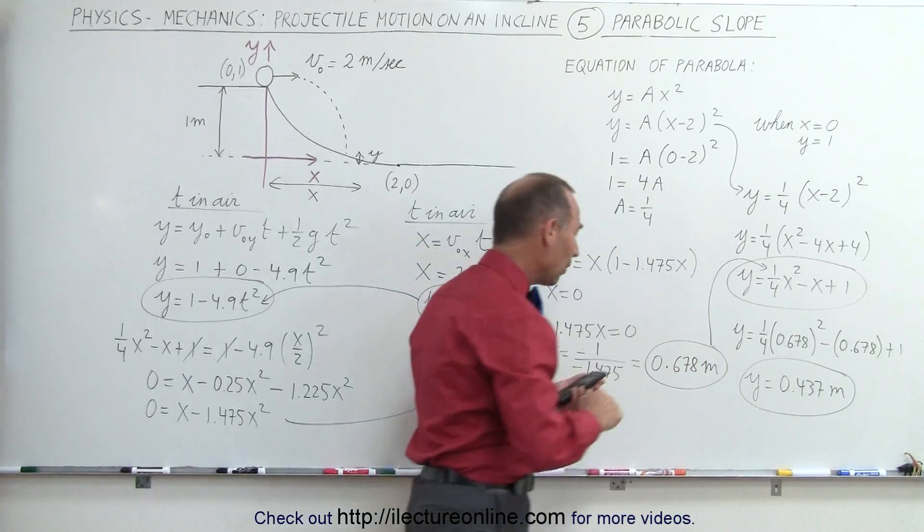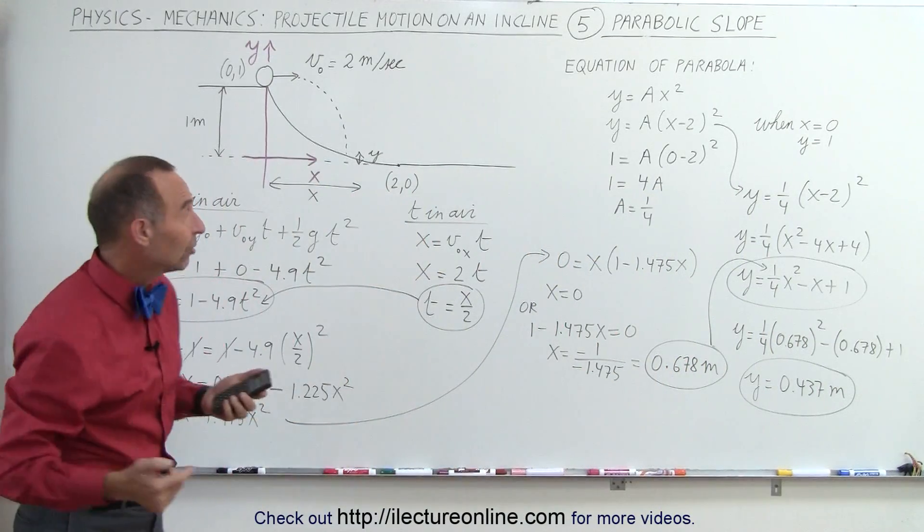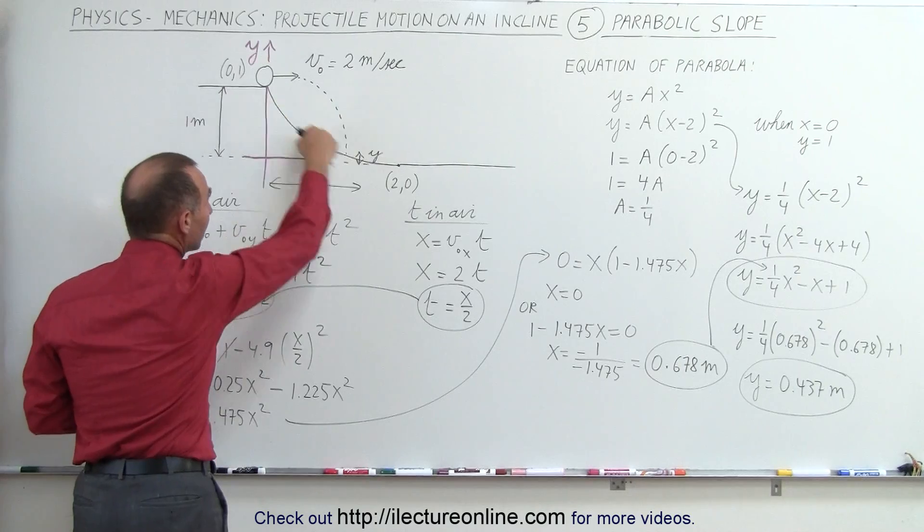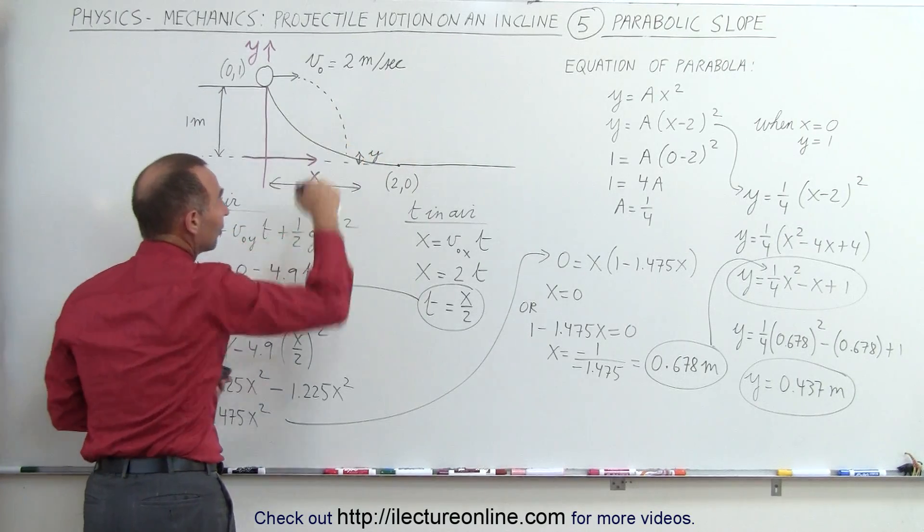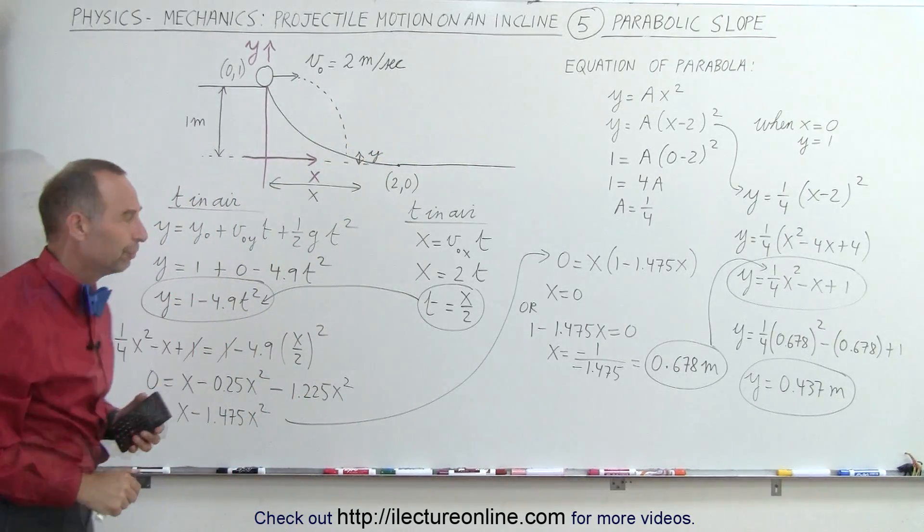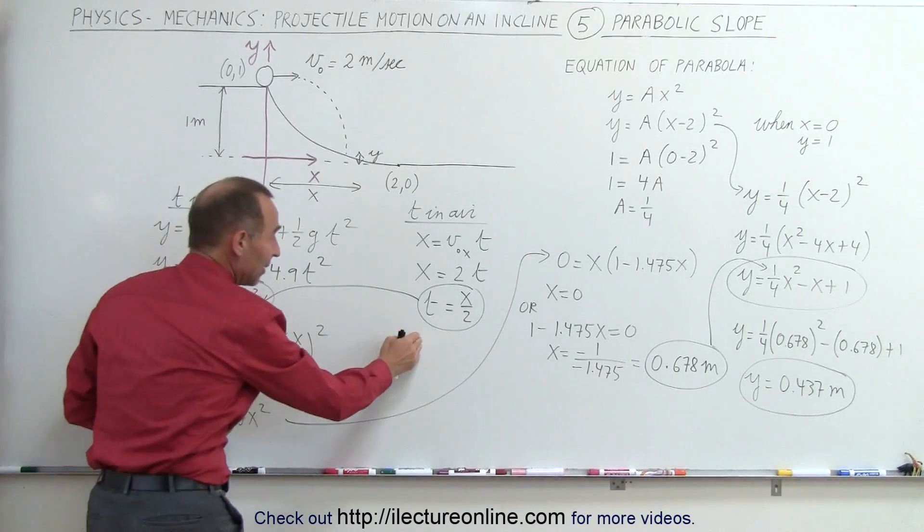So those are the x and y coordinates of the location where the projectile will hit the slope here, which is in this case a parabolic curve. Now, for one more thing, if you want to know what the time,